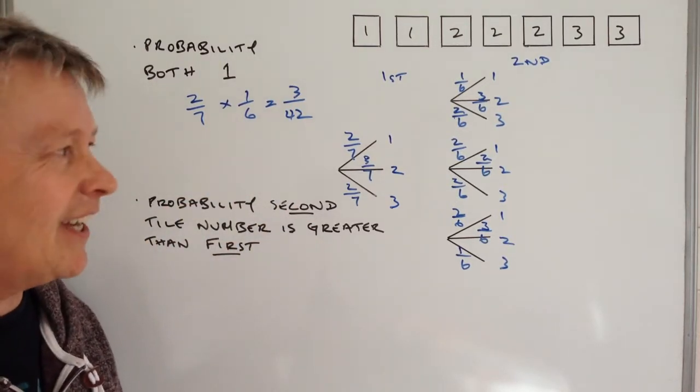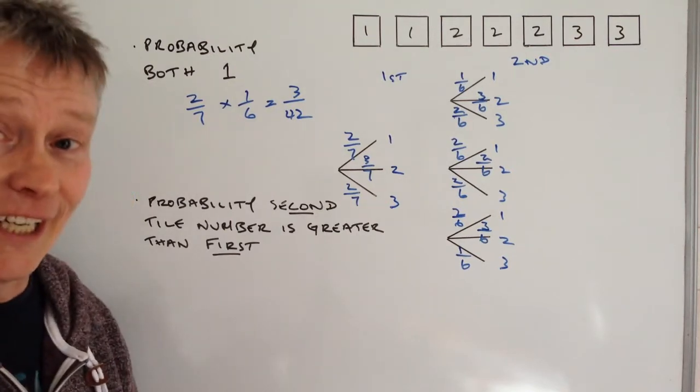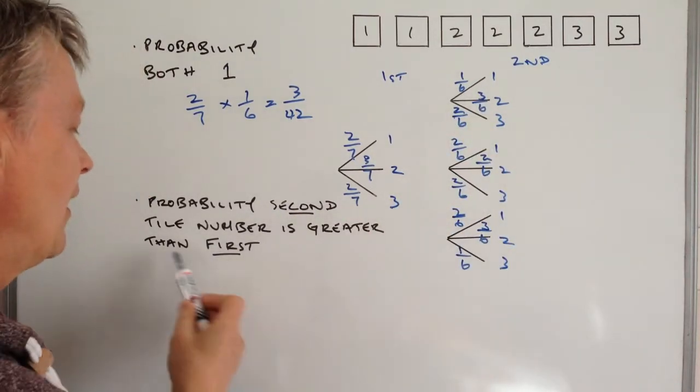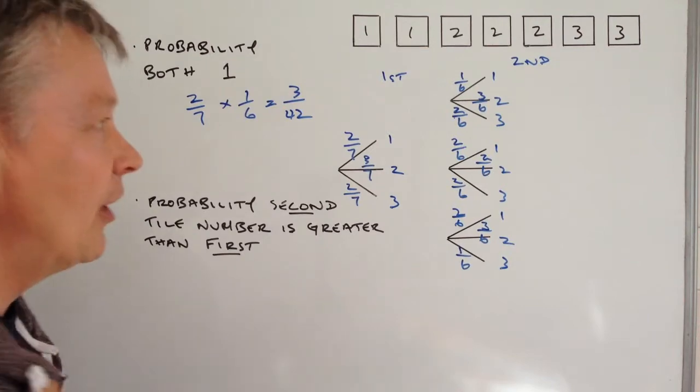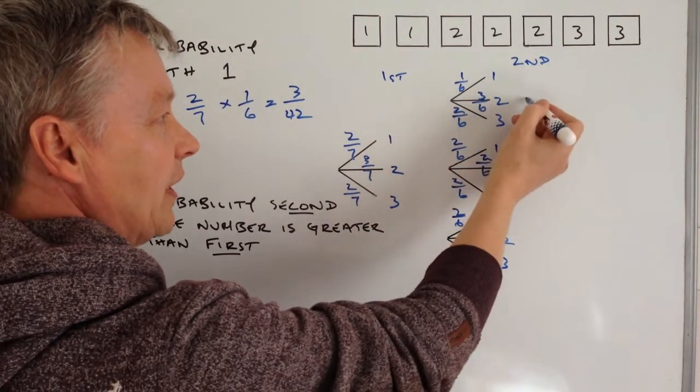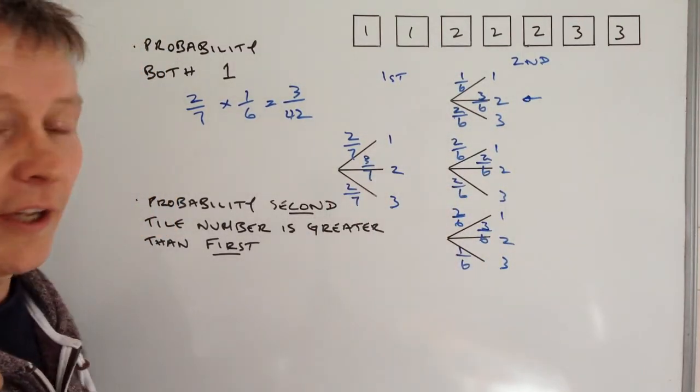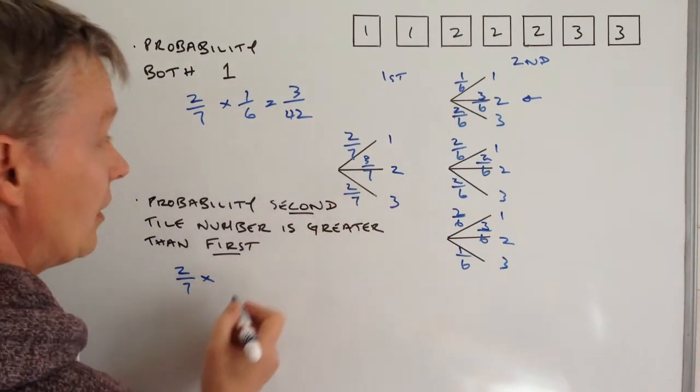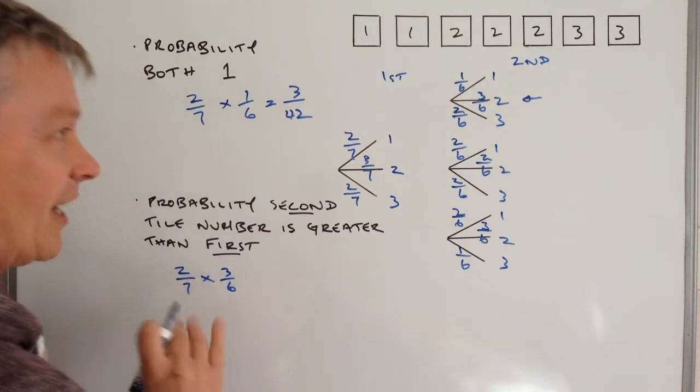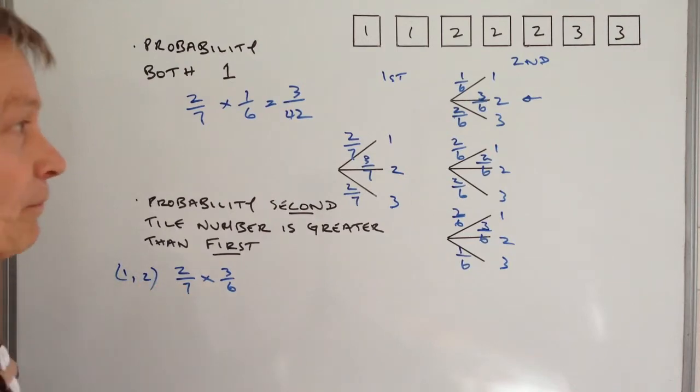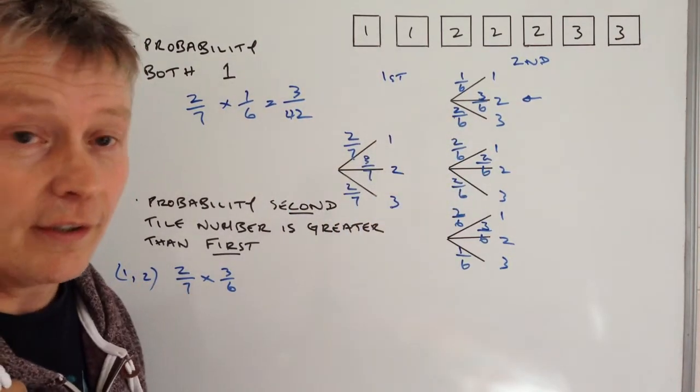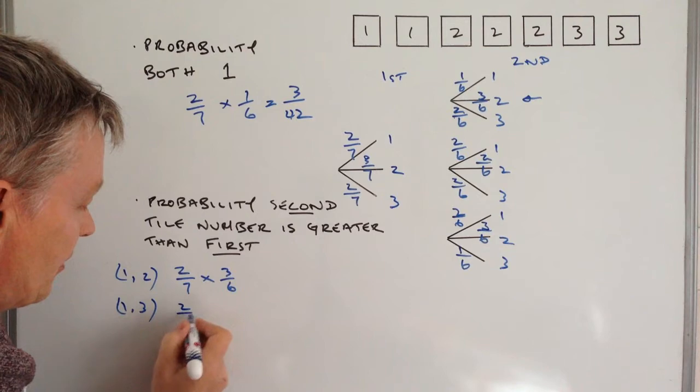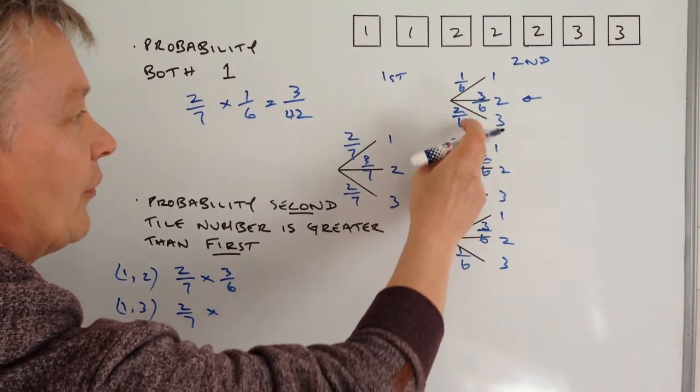Let's have a look at the second one - it's slightly more difficult but it's okay providing you understand the English. What they're saying is the probability of the second number, the second time he picks, is greater than the first number. Well let's have a look at that. The only ones we're interested in is going to be this second one here, which is where he picks a one the first time round and then a two the second time round. So that's 2/7 times 3/6, so that's the first time where he picks a one and then a two. Also we're interested in one and three, so that's going to be one and three, and that's going to be 2/7 again multiplied by - this is 2/6.